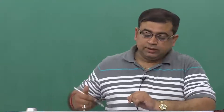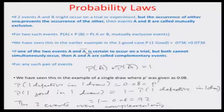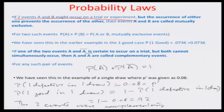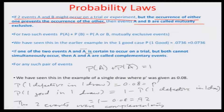Today we will be talking about mutually exclusive events. If two events A and B occur on a particular experiment or trial, and the occurrence of either one prevents the occurrence of the other, then the events A and B are called mutually exclusive.